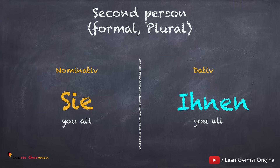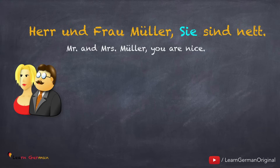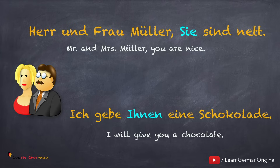You should remember that Ihnen is written with a capital I. Let's see how to use them in a sentence: 'Herr und Frau Müller, Sie sind nett. Ich gebe Ihnen eine Schokolade.' In this sentence, Ihnen is the Dativ object. The Dativ personal pronoun for Sie (formal) is Ihnen.